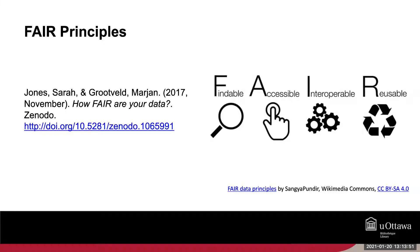The FAIR data principles were first shared in the publication 'The FAIR Guiding Principles for Scientific Data Management and Stewardship', published in Scientific Data in 2016. These are a set of guiding principles that put emphasis on making data, software, models, and other outputs Findable, Accessible, Interoperable, and Reusable. The ideal is that research data should be as open as possible, but restricted as necessary. These principles include providing rich metadata describing your data, having a persistent identifier like a DOI assigned to your data, and considering saving your data in preferred open formats.